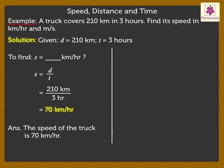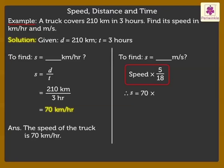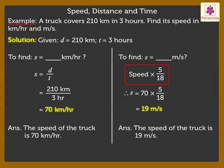Now let us find the speed in meter per second. Here, we shall use the formula speed into 5 upon 18. Thus, 70 kilometers into 5 upon 18 is equal to 19 meters per second. Thus, the speed of the truck is 19 meters per second.